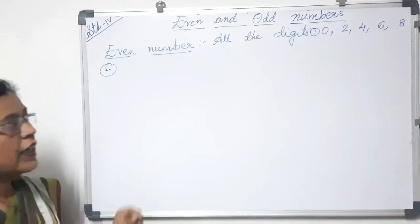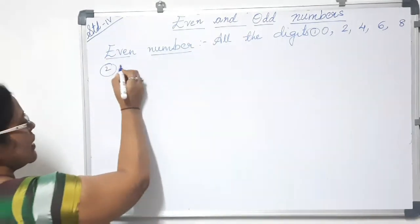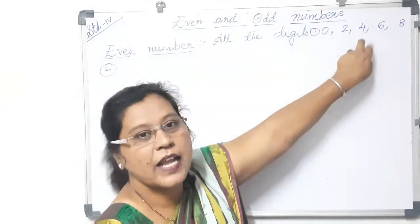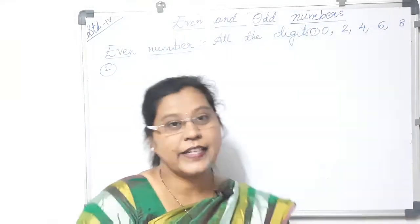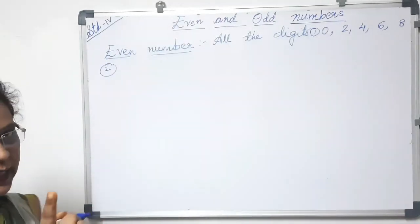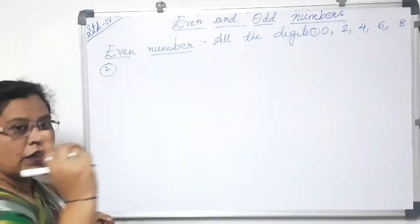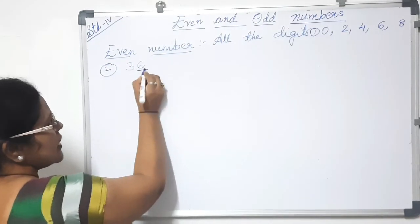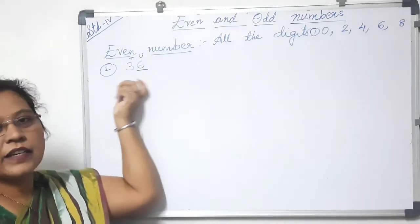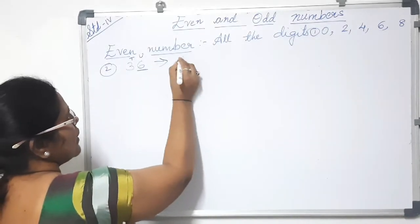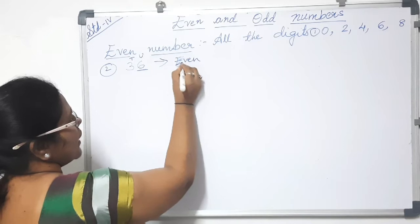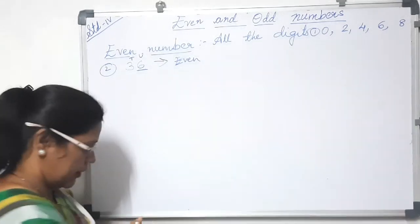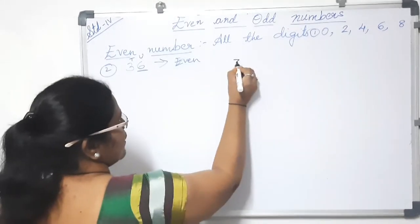The second rule to remember is that for any number — whether it is a 2-digit or 3-digit number — the ones place or units place should have one of these digits: 0, 2, 4, 6, or 8. For example, take the 2-digit number 36. Here, 6 is in the units place, so 36 is called an even number because 36 is divisible by 2.